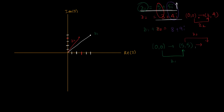Let's consider what that looks like. When you apply Z2's transformation to (5,5) — since Z2 adds three to the real part and four to the imaginary part — you arrive at (8,9). This is the same complex number you would have gotten by adding analytically.